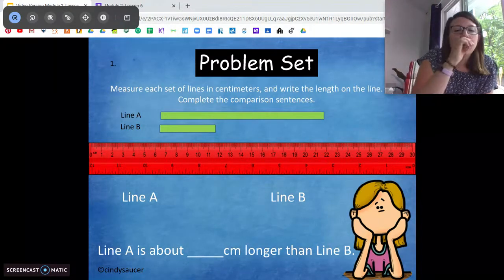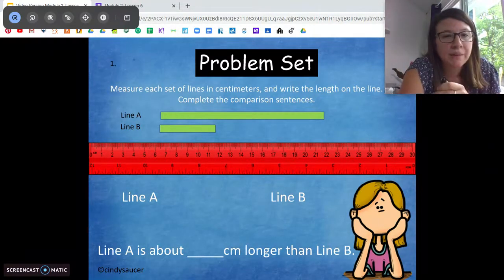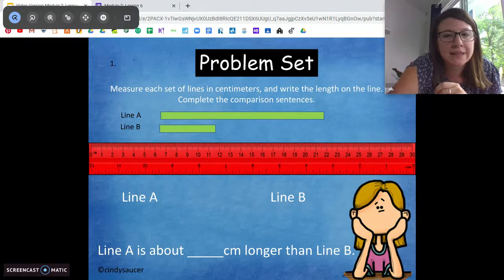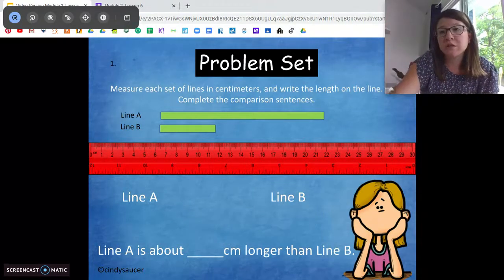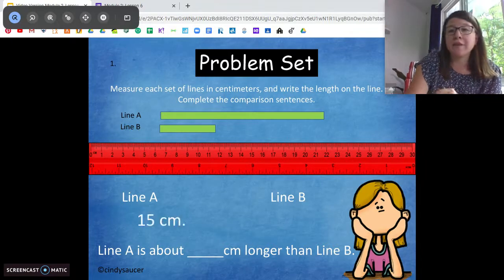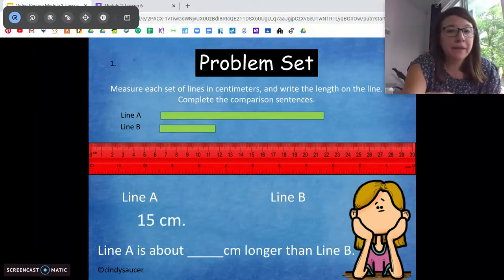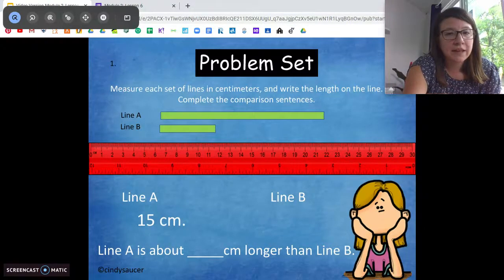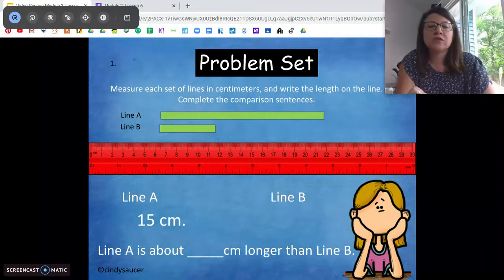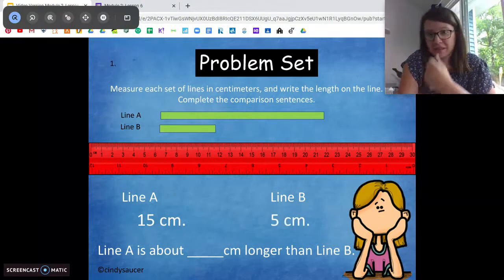Ready? Okay. So I see line A starts at about seven centimeters, ends at about 22 centimeters, and I frog jumped all the way to 22, and I got 15 centimeters. So line A is 15. Line B, I see it starts at about seven and ends at about 12-ish. So I'm going to say that's about five centimeters.